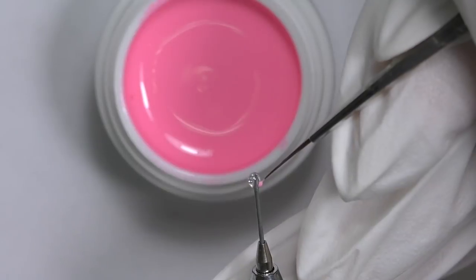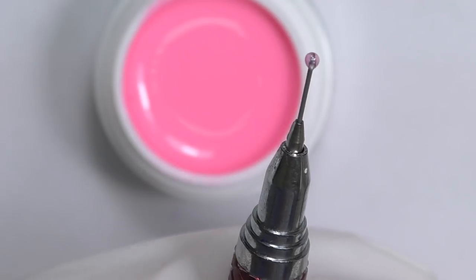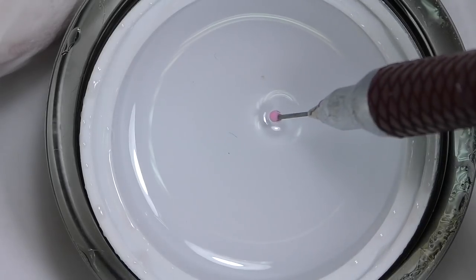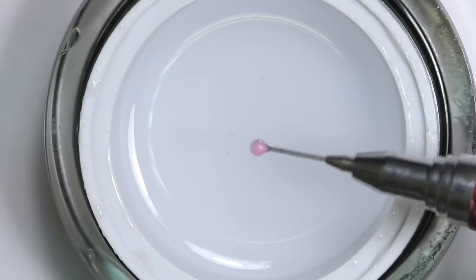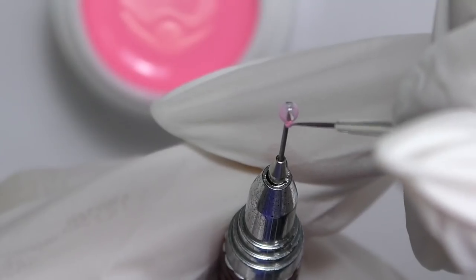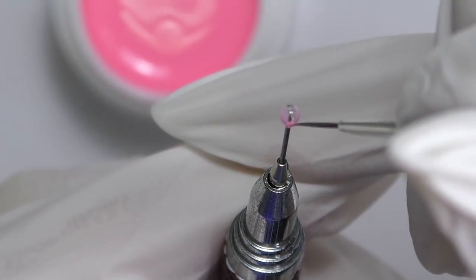Then I'm taking a pink gel and creating first two petals, one on one side and another one on the other, and cure it again. After that I will dip it in the clear builder gel again, spin it so it takes the nice rounded shape, and cure in the lamp by spinning it constantly.